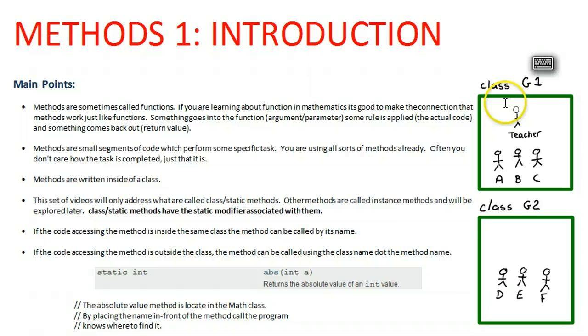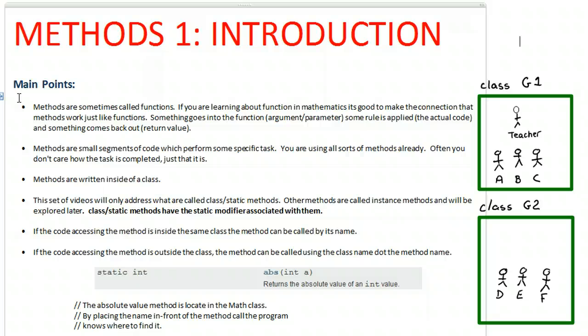Okay now don't mind my picture over here, I'll explain what this is about in a second. So methods. Methods are sometimes called functions depending on what language you're using. For example if you're programming C++ we call them functions. If you're programming in Java we typically call them methods. If you're learning about functions in mathematics a method works just like a function in mathematics. Something goes into the function, so in computer science that's the argument or the parameter, we'll distinguish between those two words later. Some rule is applied, in computer science that's the actual code you write in your method, and then something comes back out. Now just a subtle point here, something doesn't always have to come back out but often something will and that's called the return value.